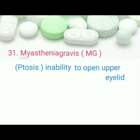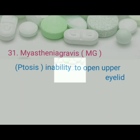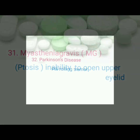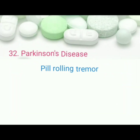Myasthenia gravis: pathognomonic sign is ptosis, inability to open the upper eyelid. Parkinson's disease: pathognomonic sign is pill-rolling tremor.